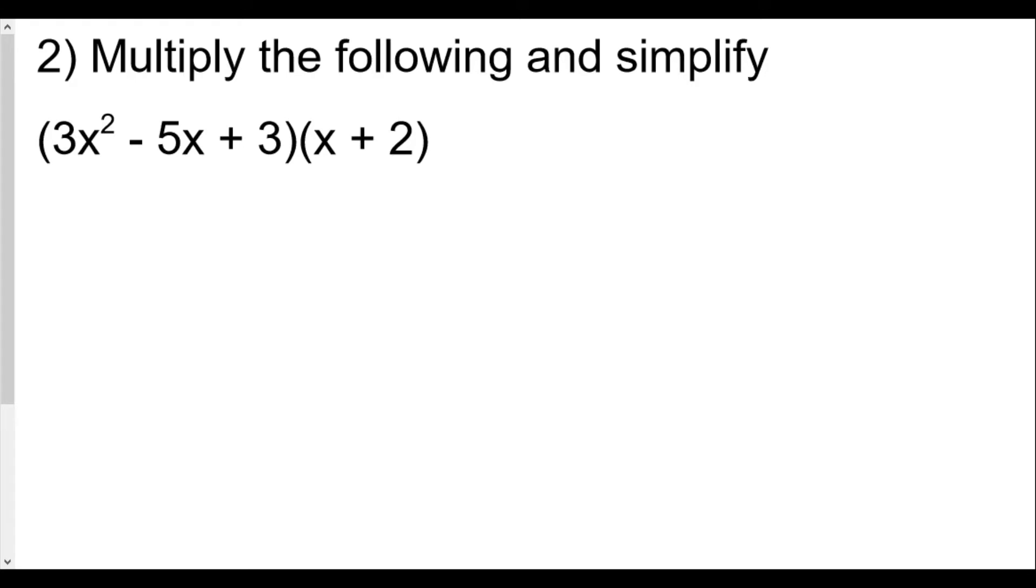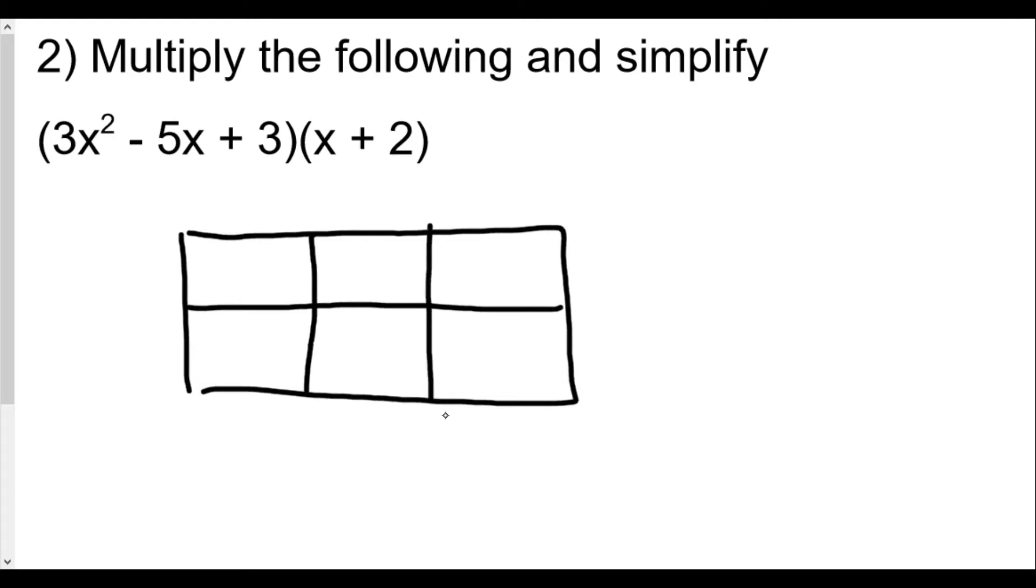I like to set up a box method where you create a box or rectangle whose grid is based upon the number of items in the first polynomial by the second polynomial, so really it's a 3 by 2 here. The 3x² - 5x + 3, I'm going to put that on top. Each of these spaces represents each term in the first trinomial, and down the side almost like the length is the first polynomial and the height is the second polynomial.